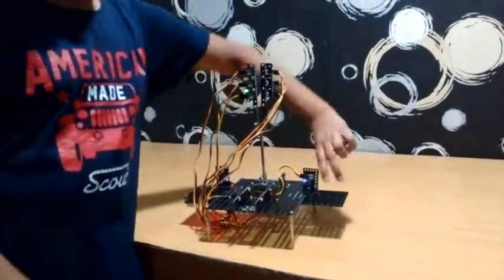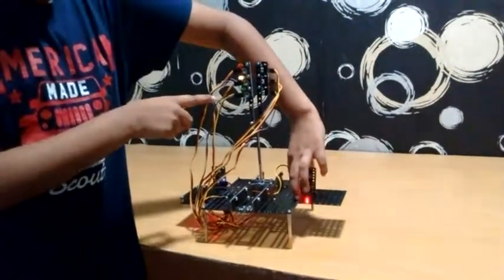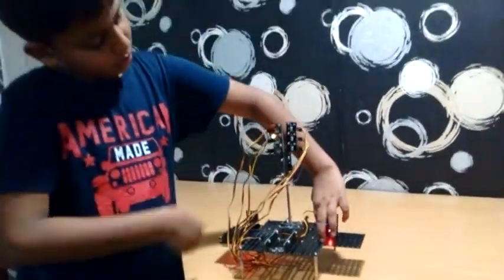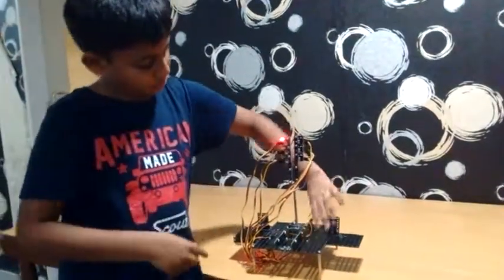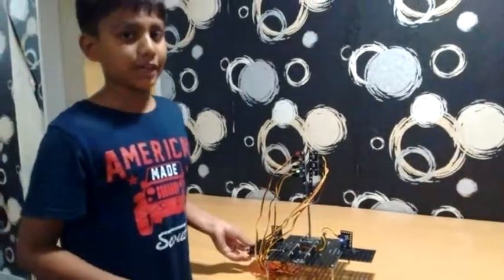And this side also is the same. Here, when he comes over here, it will turn to yellow and then it will turn to red, so he could cross again. Thank you.